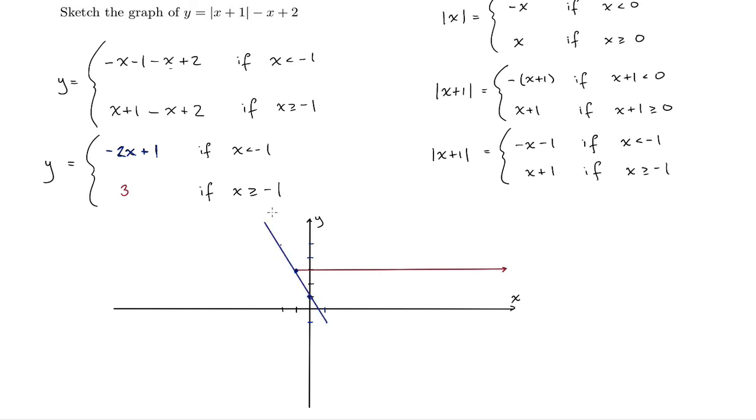However, notice that this is only true if x is less than negative 1. So everything to the right, we don't have any of that, so we can get rid of that. So there's a sketch of our function. We've got our line to the left of negative 1 and then the constant function to the right of negative 1.